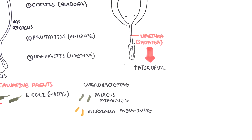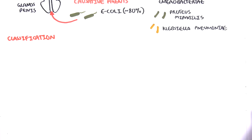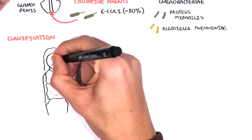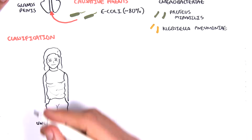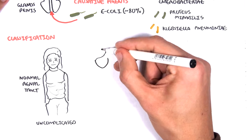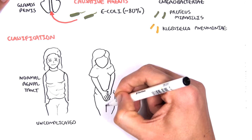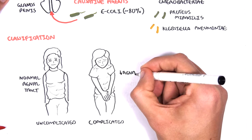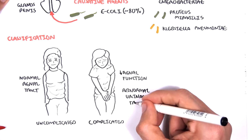Another way to categorize UTI is as either complicated or uncomplicated. Uncomplicated UTI means the renal tract and function are normal. With complicated UTI, there is decreased renal function based on investigations and symptoms, and potentially an abnormal urinary tract.